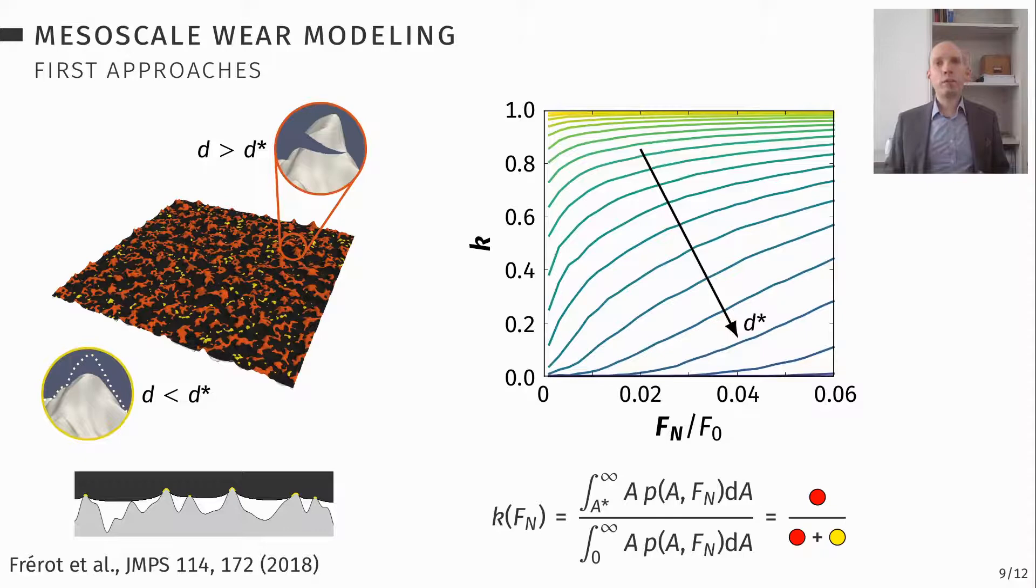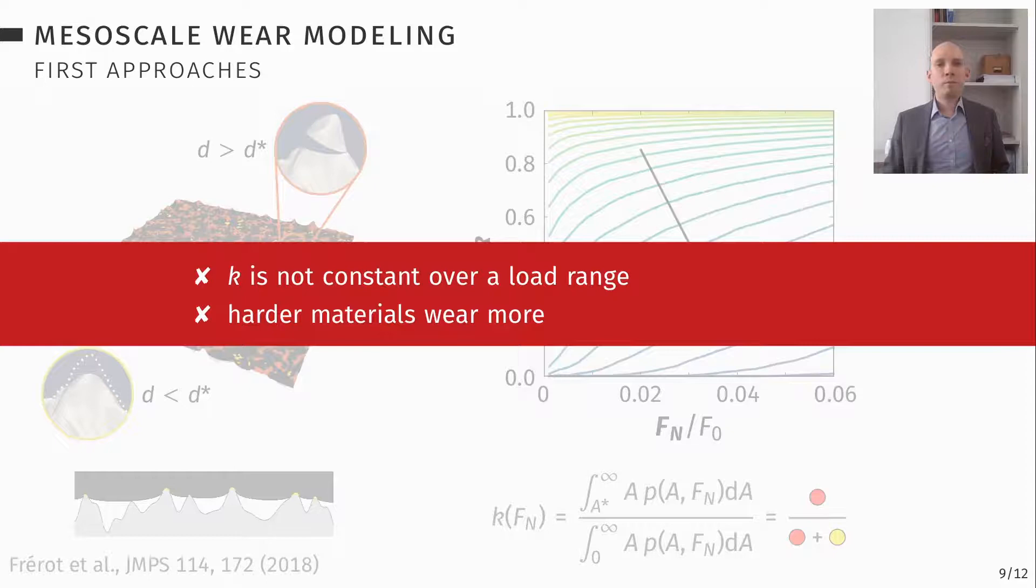Furthermore, if you increase your d star, your wear coefficient goes down. Well, so what? The problem is d star in this formulation that we use is inversely proportional to the square of the hardness, means harder materials wear more in this model. This is not good. Also again, k is not constant over the load range. So we are missing something here.